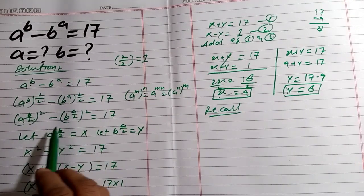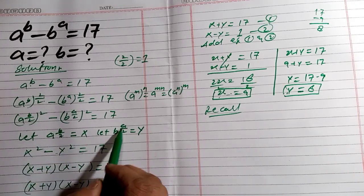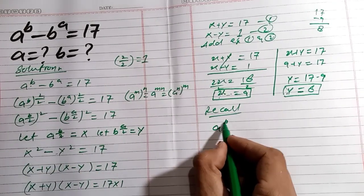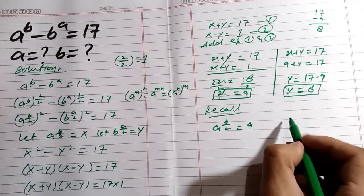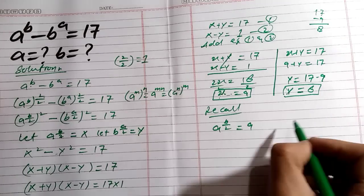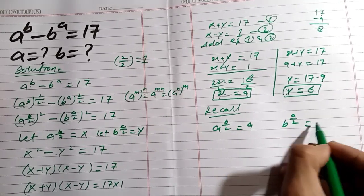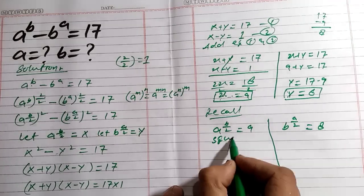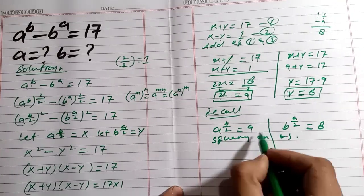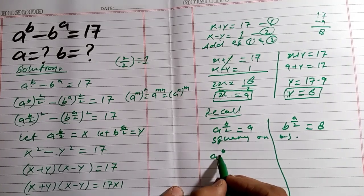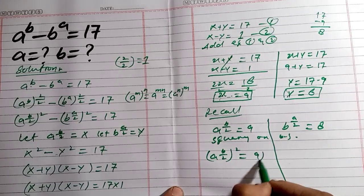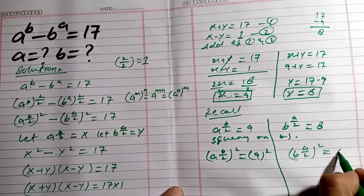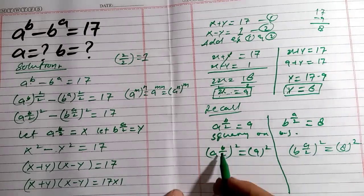Recalling our substitutions: x = a^(b/2) = 9 and y = b^(a/2) = 8. Squaring both sides of each equation: a^(b/2) squared equals 9 squared, and b^(a/2) squared equals 8 squared. This gives a^b = 81 and b^a = 64.